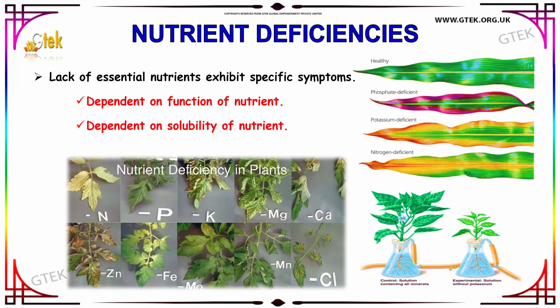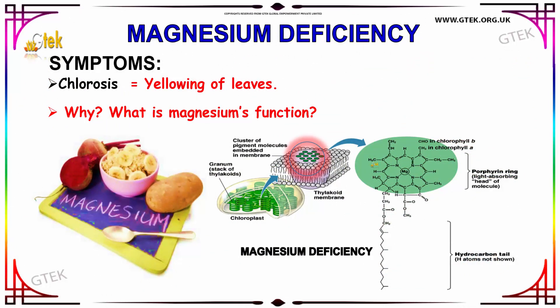Let us talk about nutrient deficiencies. A nutrient deficiency is the lack of essential nutrients and it exhibits specific symptoms, dependent on the function of the nutrient and its solubility. You can see nutrient deficiency in plants here — this is a healthy plant, this is a phosphate-deficient plant, this is a potassium-deficient plant, and here is a nitrogen-deficient plant.